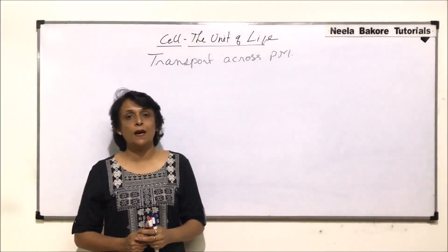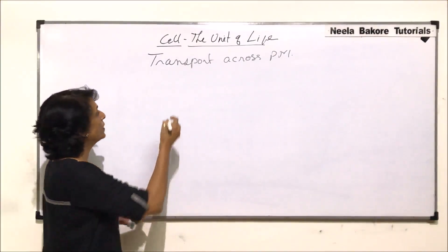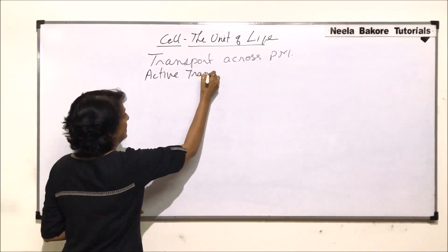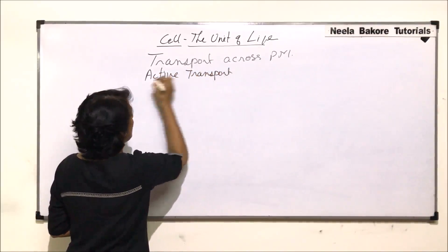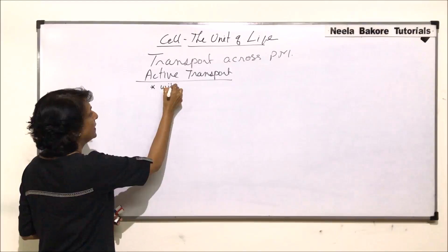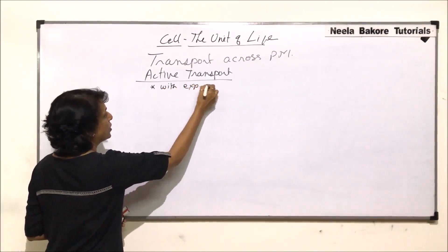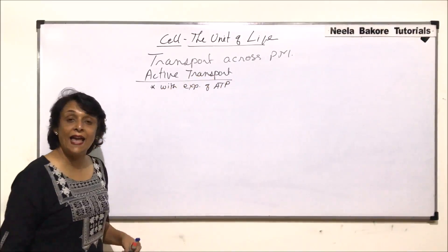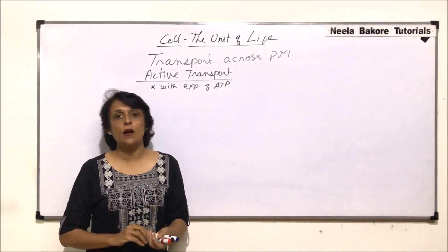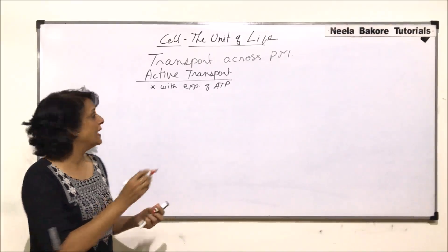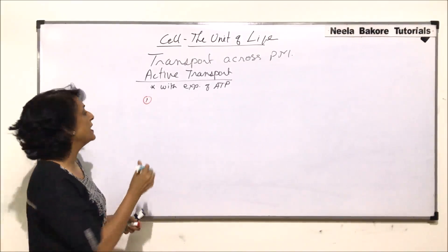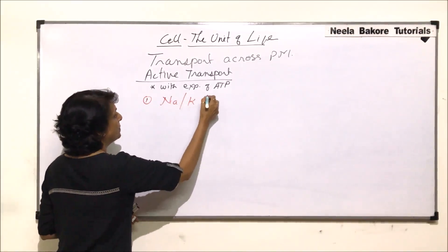In this video, we will talk about active transport across the plasma membrane. Active transport involves expenditure of energy, that is ATP. We have already understood that in active transport, 100% of a substance can be taken in. The first example of active transport is known as the sodium-potassium pump.